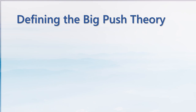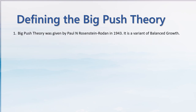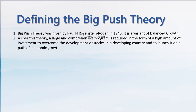Defining the Big Push Theory. Big Push Theory was given by Paul N. Rosenstein-Rodan in 1943. It is a variant of balanced growth. This is an economic development theory that you should know if you are preparing for UGC NET or some competitive exams related to economics.